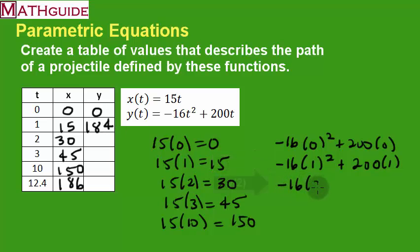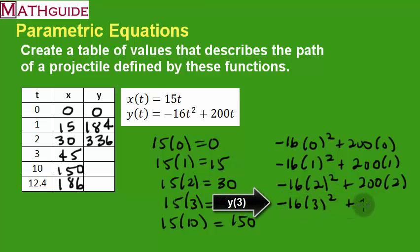Likewise, do the same thing for 2. You put 2 in, and again I would just plug this into a calculator, and you get 336. We'll do this again for 3. Negative 16 times 3 squared. Plug it into a calculator, and we get 456.